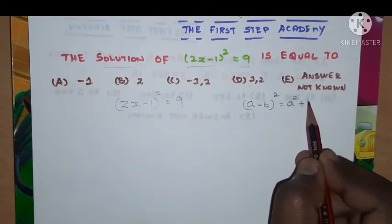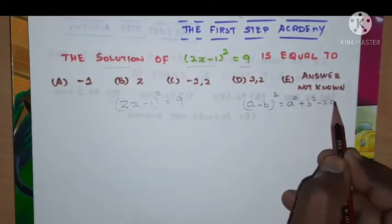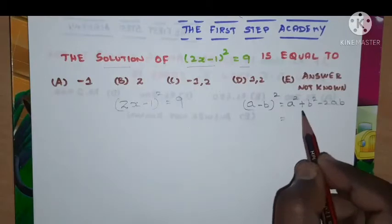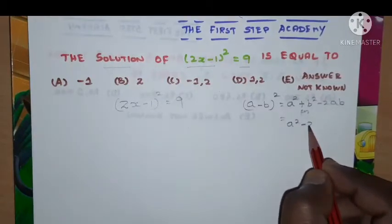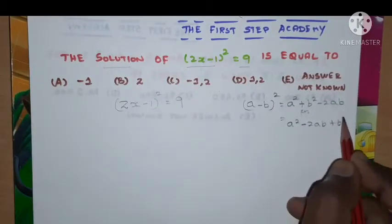to a² + b² - 2ab, or otherwise we can write as a² - 2ab + b².